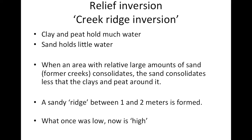So, the bullet points: clay and peat hold much more water; sand holds little water. When an area with a relative amount of sand — a former creek or former river — consolidates, the sand consolidates less than the surrounding clays and peats. A sandy ridge between one and two meters high is formed in the land. What once was low, now is high. An inversion of relief.